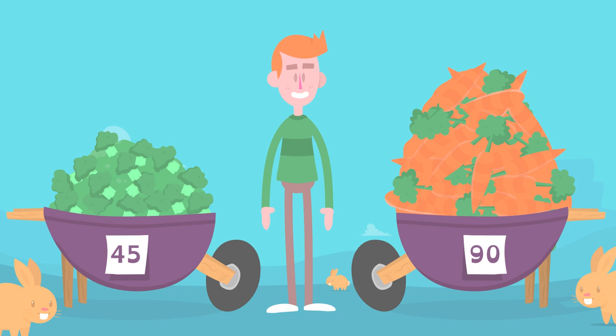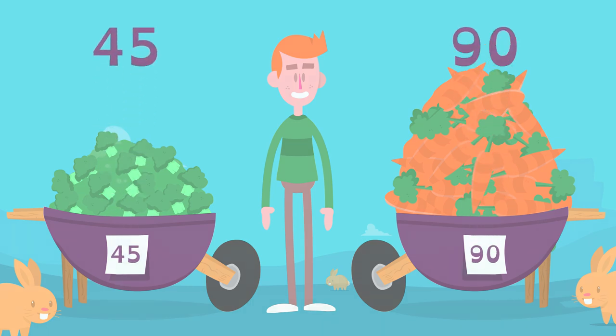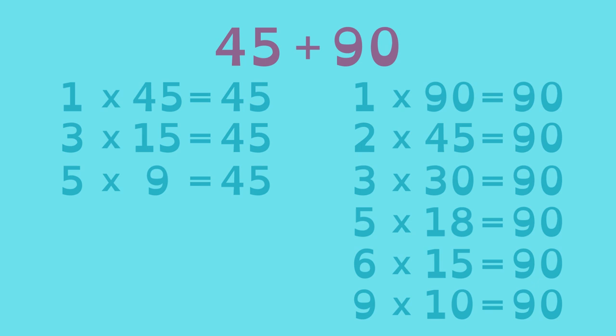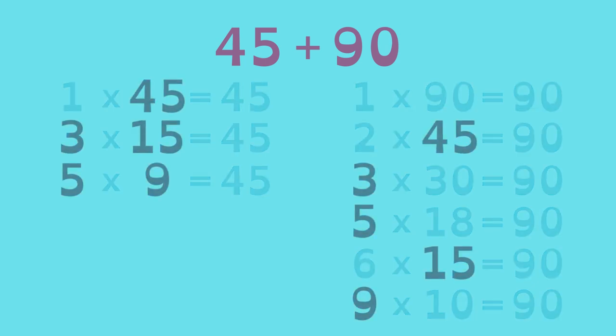Understanding how to find the greatest common factor is especially helpful when working with large numbers. Let's say Carl has 45 broccoli pieces and 90 carrots. He writes out the factors of 45 and 90, identifies their common factors, and finds their greatest common factor.